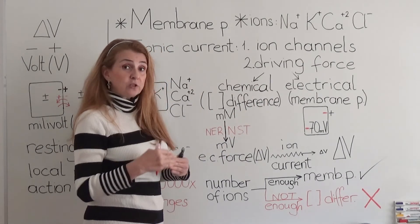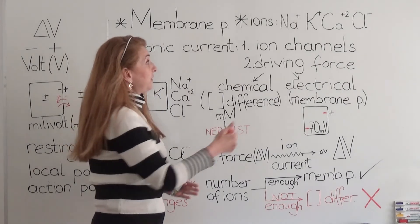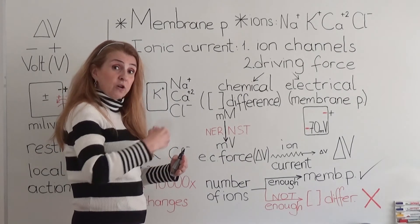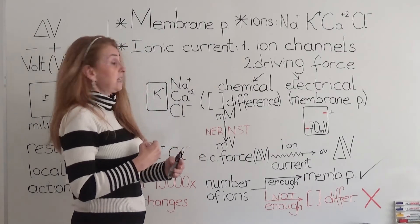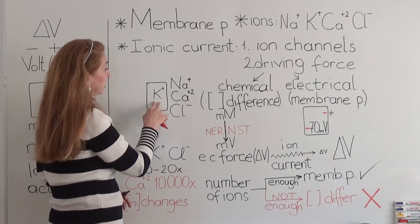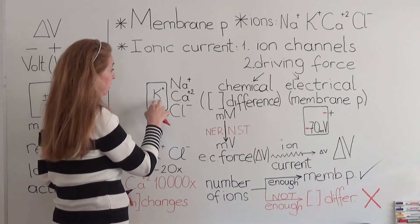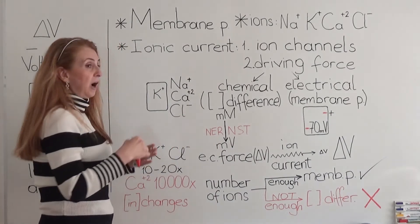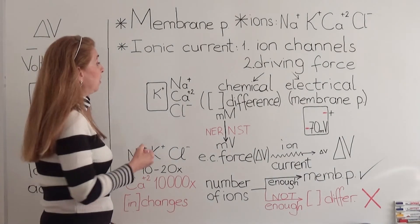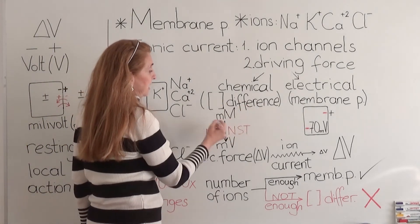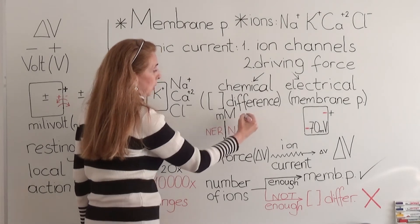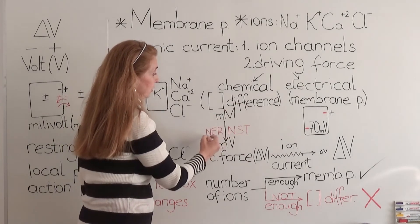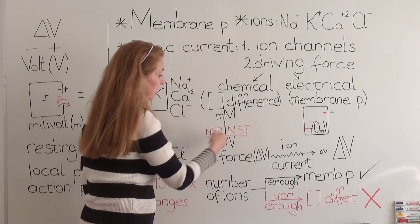The chemical force is produced by the concentration difference of ions. Sodium, potassium, calcium, and chloride all have a difference between their concentrations in the intracellular fluid and the extracellular fluid. Potassium is in higher concentration on the inner side of the membrane. The other three ions — sodium, calcium, and chloride — have higher concentration in the extracellular fluid. This concentration difference has the unit of millimolar. As I will explain in another video, we convert this millimolar chemical force to millivolts using the Nernst potential.